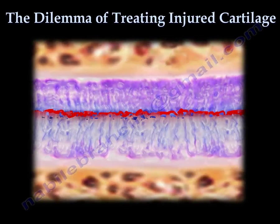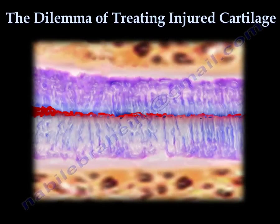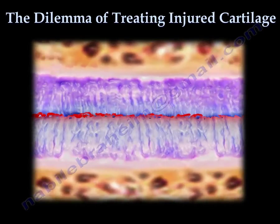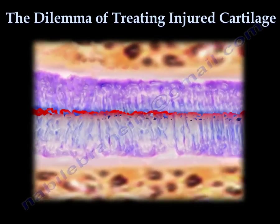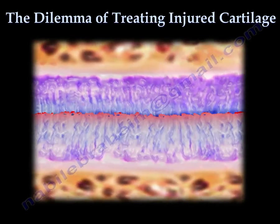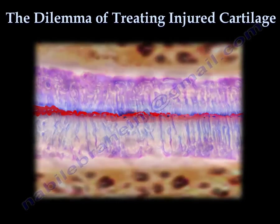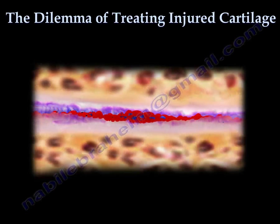If the cartilage is subjected to excessive weight, overuse, improper alignment, or injury, it begins to wear away, leaving bone to rub on bone.